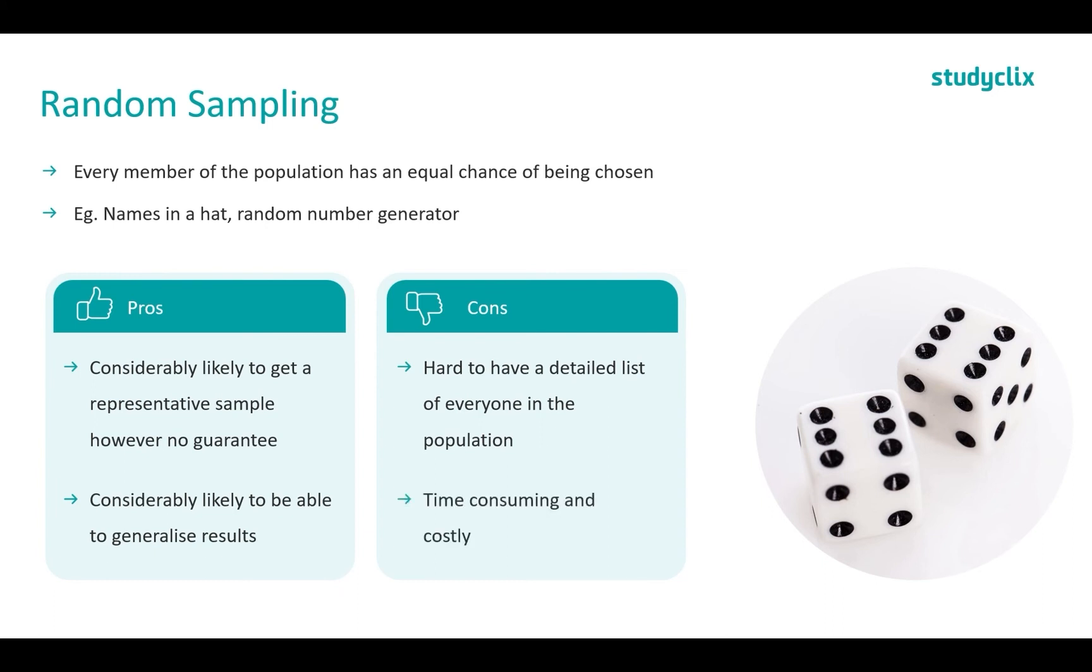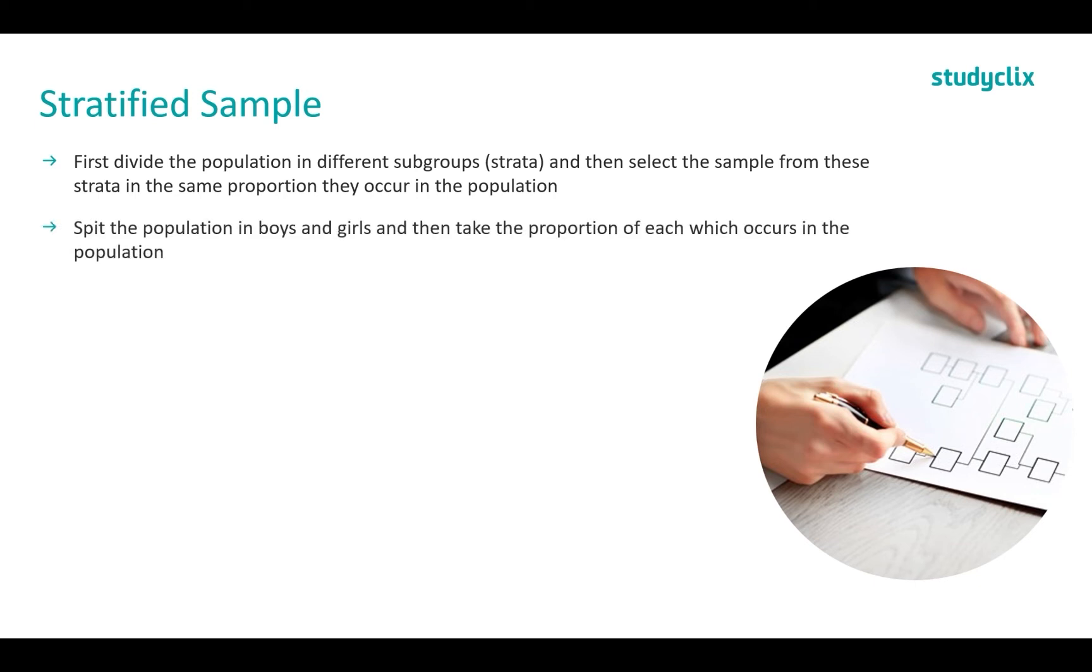Next we have stratified sample. First we divide the population into subgroups, also known as strata, and then select the sample from the strata in the same proportion they occur in the population. So for example we could split the population into boys and girls and then take the proportion of each which occurs in the population.